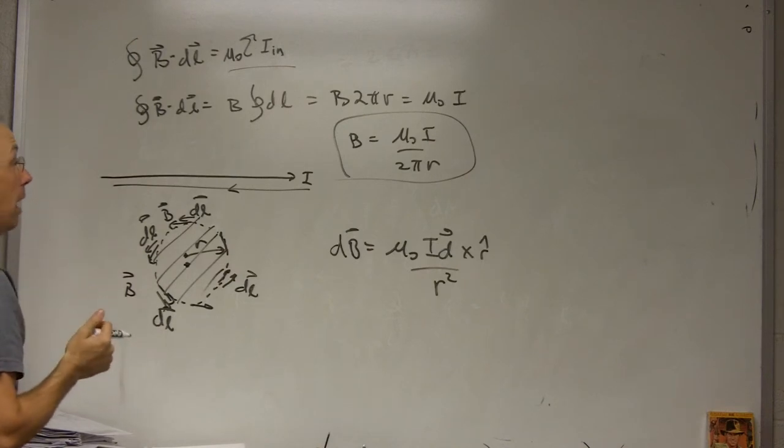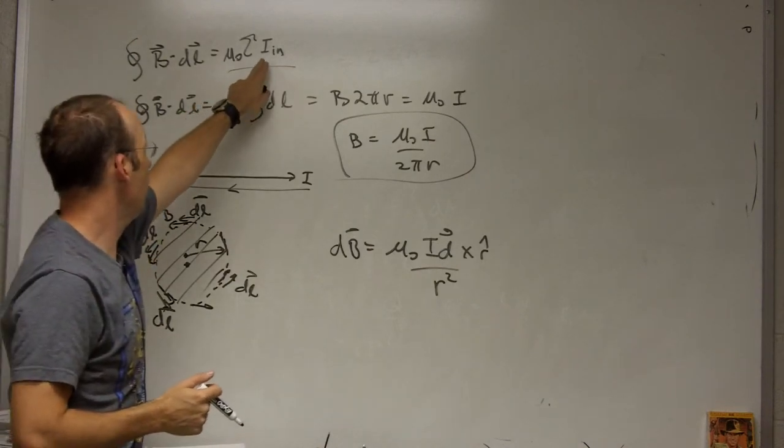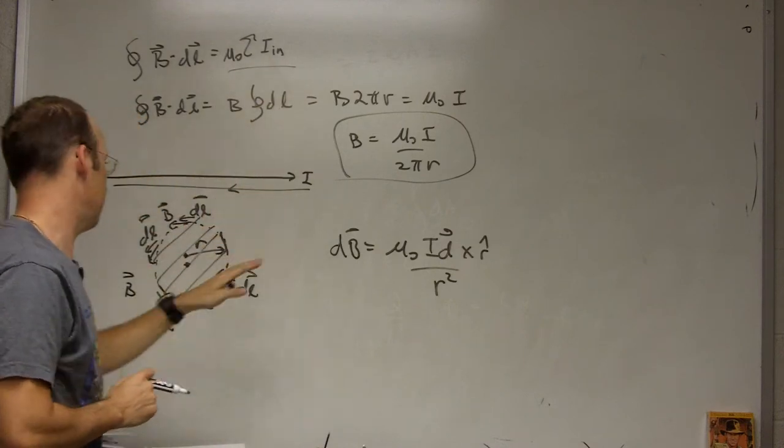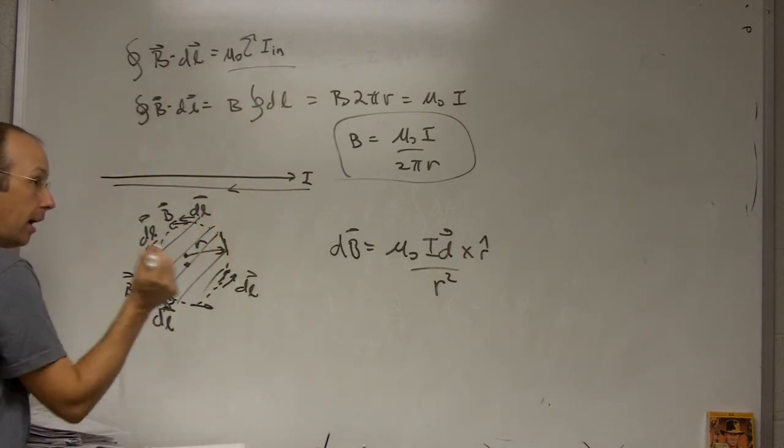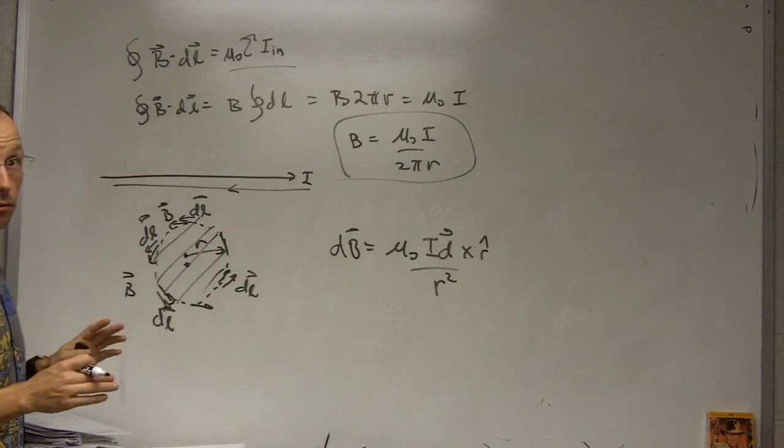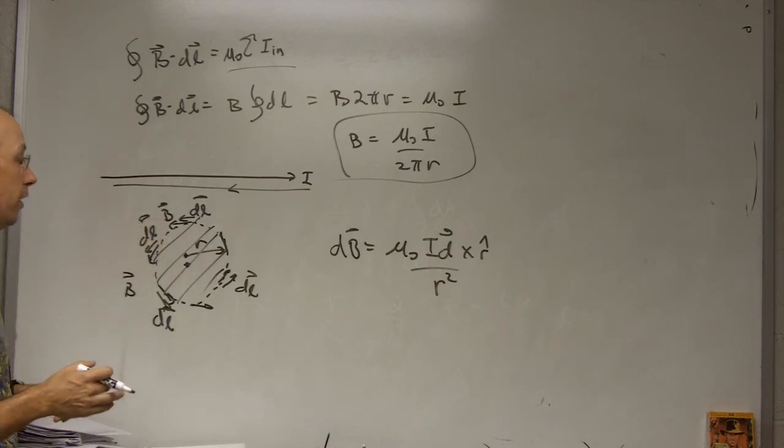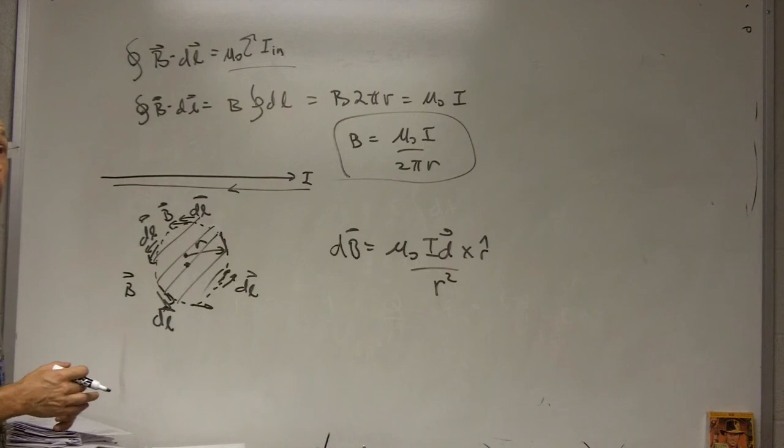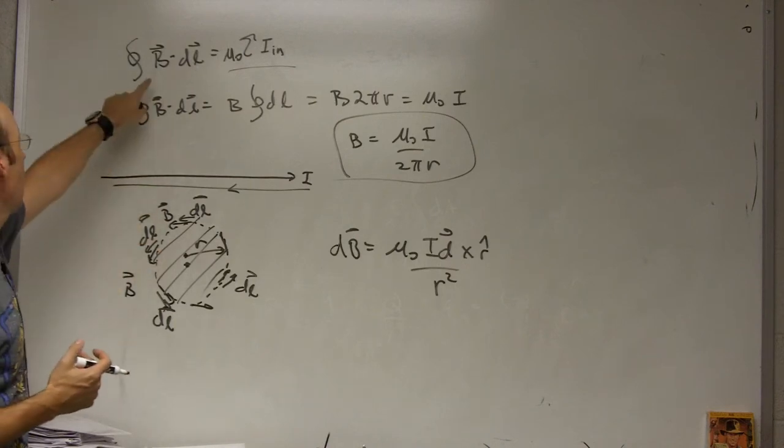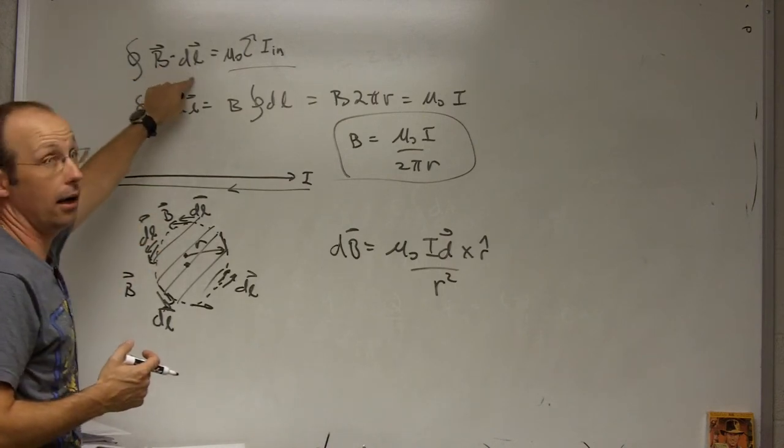Well, you may clearly see right away that the sum of the currents, in this case passing through that area, if I have I coming out and I going in, that's zero. Does that mean the magnetic field is zero? No, it doesn't. It means that the integral of B dot DL is zero.